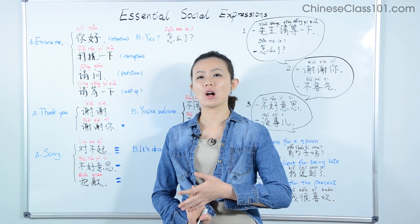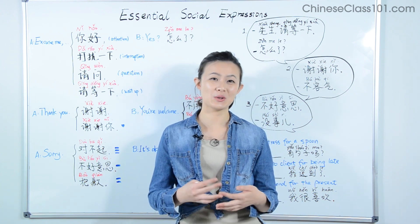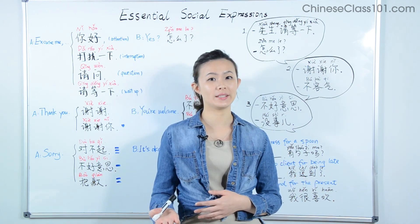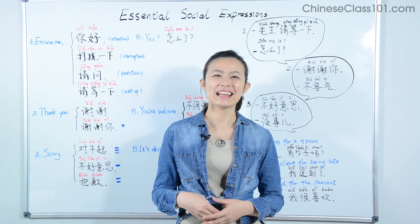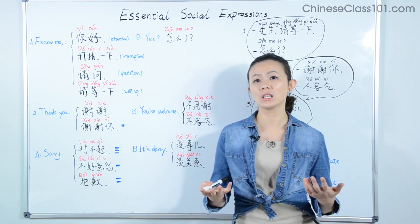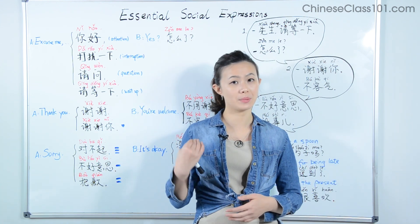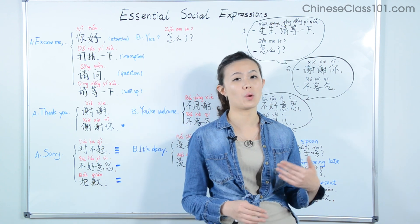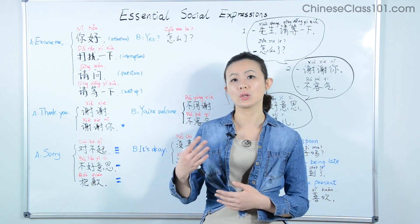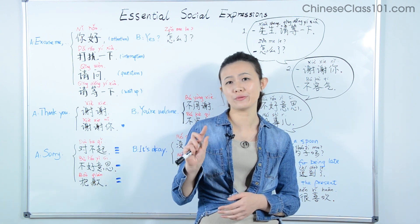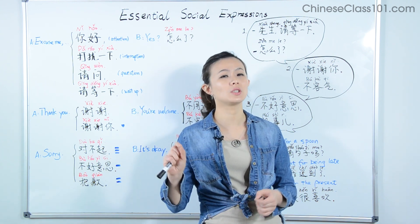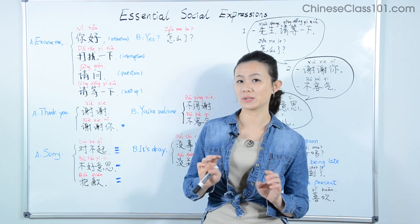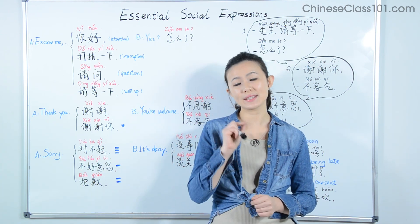Social expressions are phrases we say in social situations — for example, thanking someone for what they've done for us, or apologizing for things we've done to them. One of the most useful English social expressions is 'excuse me.' I've been trying to find the exact phrase for 'excuse me' in Chinese, but I've failed, because there is just no single phrase in Chinese that covers all uses of 'excuse me.'